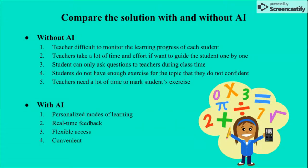Comparing with and without AI: without AI, teachers are difficult to monitor the learning progress of each student. It takes a lot of time and effort to guide students one by one. Students can only ask questions during class time and cannot reach teachers after class — they may not have the teacher's contact or are too shy to ask. Students don't have enough exercises for topics they haven't mastered, and some need more exercises than others. Teachers also need a lot of time to mark student exercises.